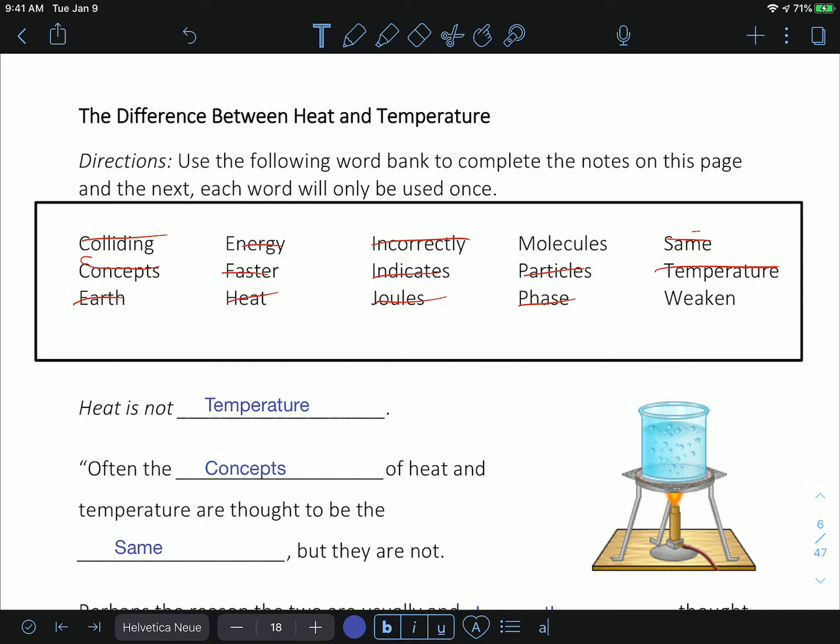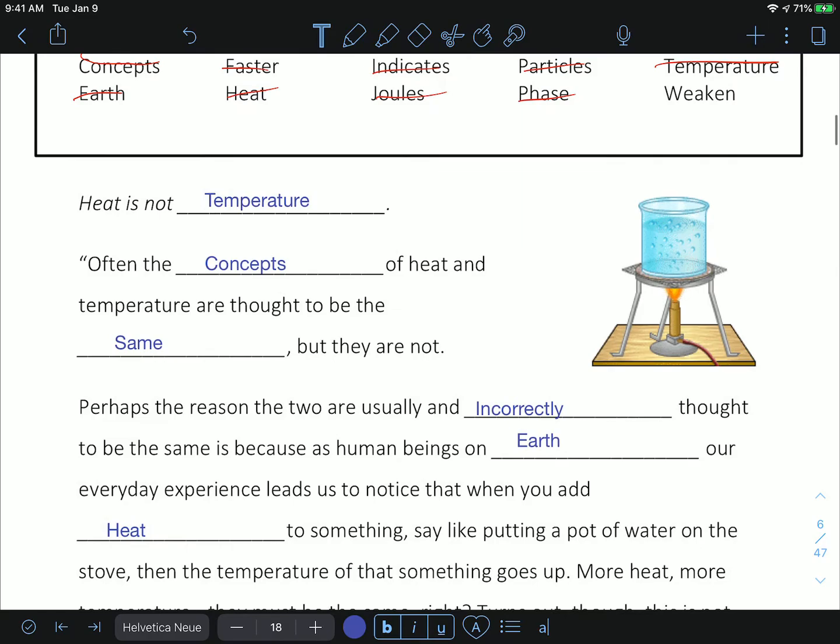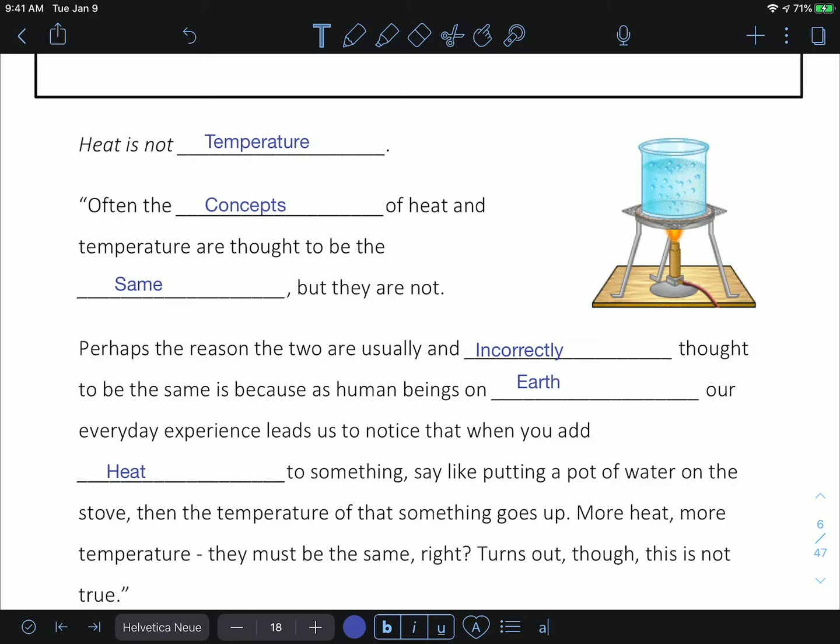We often convolute the two, we mix the two ideas together because we think of things that have a lot of heat are very hot, so they have a high temperature. But those are not the same thing, they are connected. The reason the two are usually and incorrectly thought to be the same is because as human beings on earth, our everyday experience leads us to notice that when you add heat to something, say putting a pot of water on the stove, then the temperature of that something goes up.